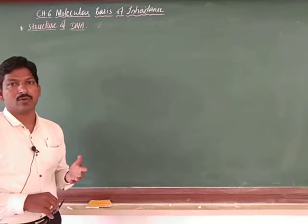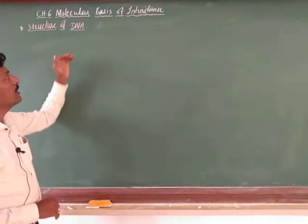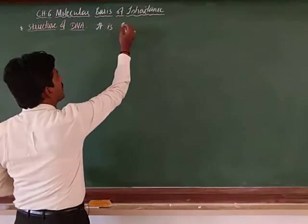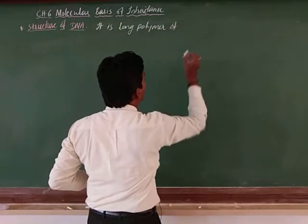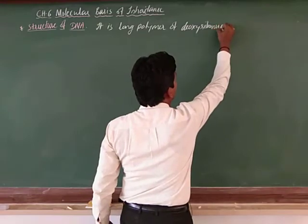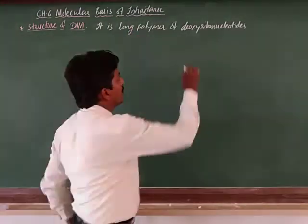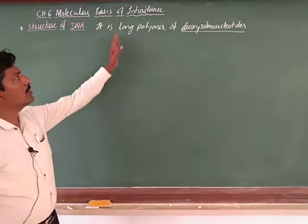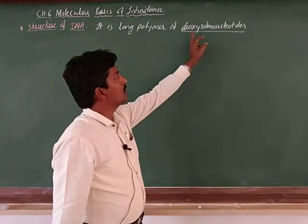Before going to study the Watson-Crick model, let us see the details about the structure of DNA. As you know, DNA is a long polymer of deoxyribonucleotides. It is a long chain — we will see how to measure that length later.